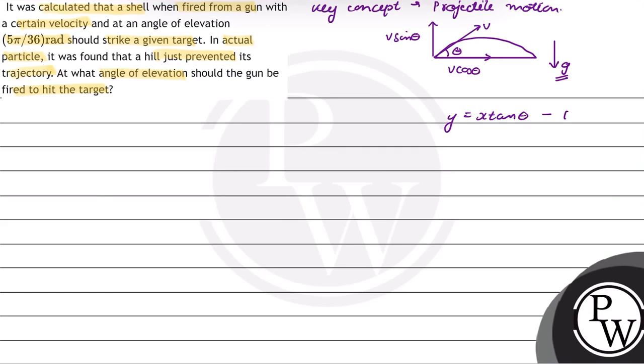minus g x squared over 2 v0 squared cos squared theta. The horizontal range is given by v0 squared sin 2 theta over g.